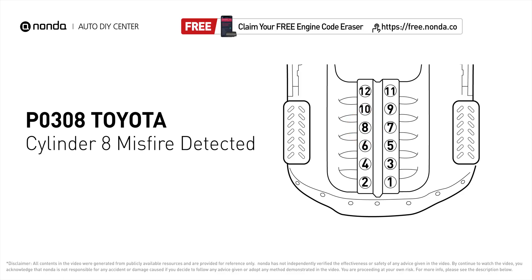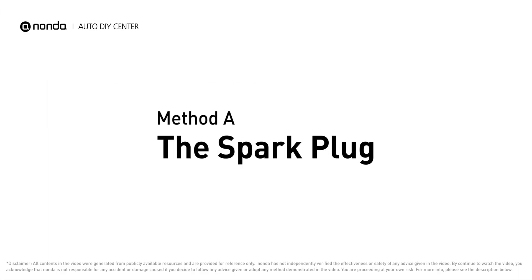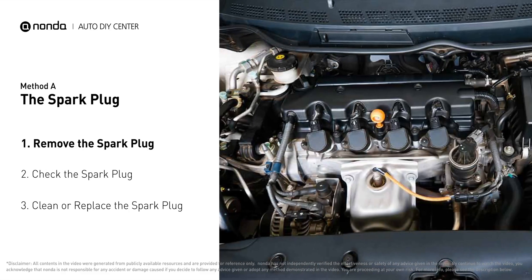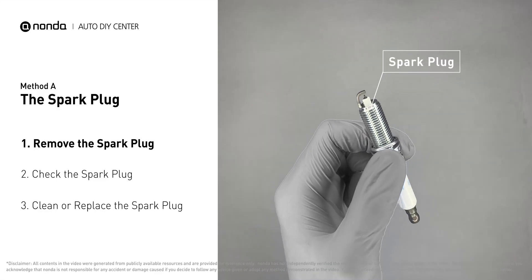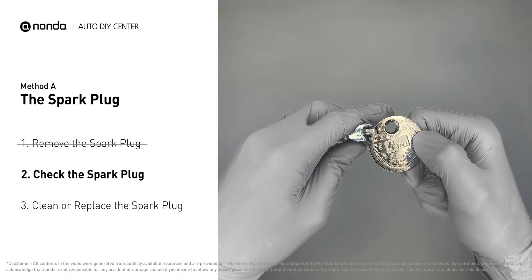Here are two of the most practical solutions to fix Toyota's P0308 error code. Method A: the spark plug. The spark plugs are located at the engine end of the wires, under the plug covers that attach them. First, carefully remove the spark plug. Use a spark plug gapper to check the spacing of the spark plug.